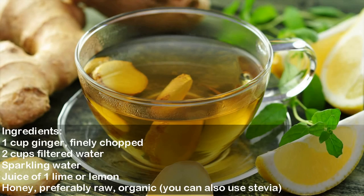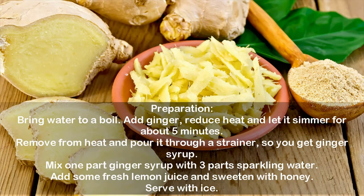Ingredients: one cup finely chopped ginger, two cups filtered water, sparkling water, juice of one lime or lemon, and honey (preferably raw and organic — you can also use stevia). Preparation: bring water to a boil, add ginger, reduce heat and let it simmer for about five minutes. Remove from heat and pour through a strainer to get ginger syrup. Mix one part ginger syrup with three parts sparkling water, add some fresh lemon juice, sweeten with honey, and serve with ice.